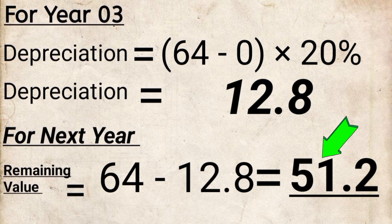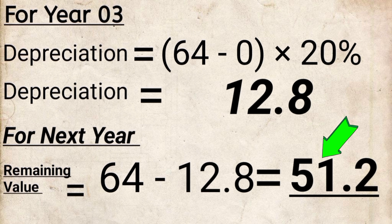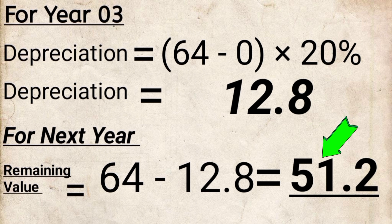64 minus 12.8 equals 51.2. So the remaining undepreciated value after 3 years is 51.2% of the original cost.